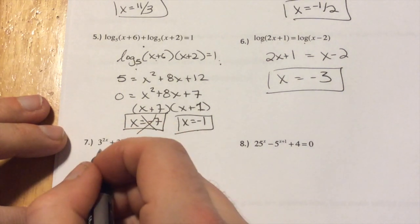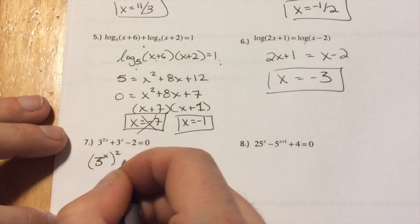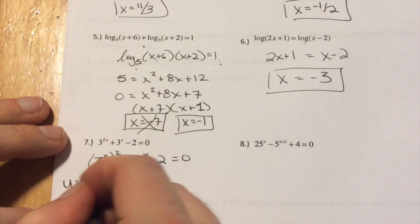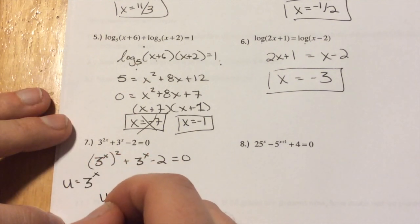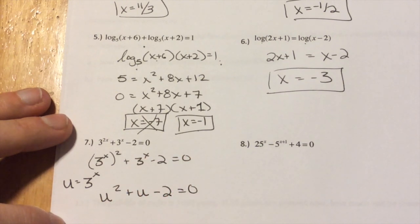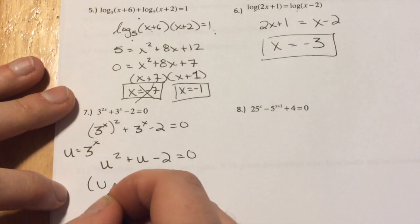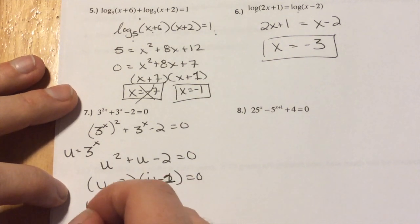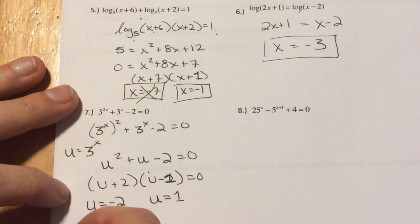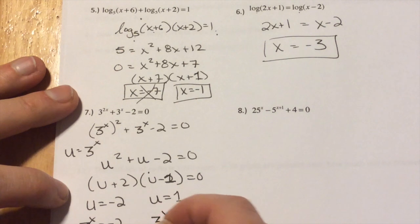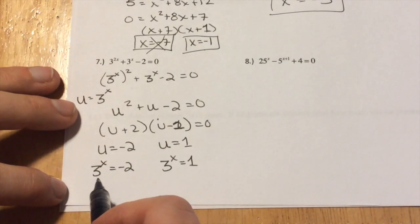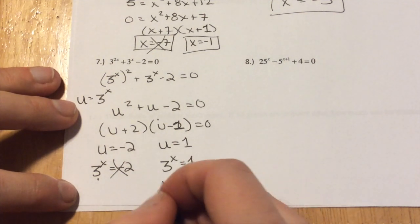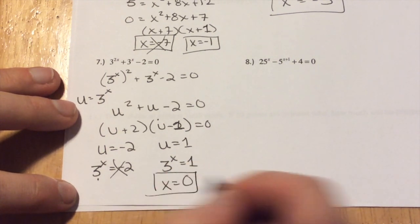Last up gets to the u substitution questions. So take a look at this. This is really close to a quadratic. We have 3x squared, 3 to the x squared plus 3 to the x minus 2 equals 0. So we've been doing a u substitution. We're saying u equals 3 to the x, which is the same as u squared plus u minus 2 equals 0. So we can factor this guy. This is just u plus 2, u minus 1. So that means u equals negative 2 and u equals 1. So this is saying 3 to the x equals negative 2 and 3 to the x equals 1. Well, we should know by now that exponential functions are positive number generators. So I can never get a negative 2 out of this, so that doesn't work. I have 3 to the x equals 1. So the only number that makes that 1, x has to be 0.